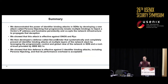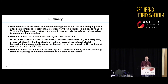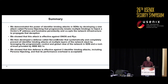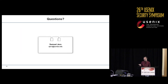In conclusion, we've demonstrated the power of identifier binding attacks in SDN by developing a new attack called persona hijacking that breaks multiple bindings to hijack the victim's IP address and hostname persistently, and co-opts the network infrastructure to propagate that. We've shown this attack is effective against ONOS and Ryu. We then developed a defense called SecureBinder to completely prevent these identifier binding attacks by leveraging the global view of the network provided by SDN and a root of trust provided by 802.1x, and we've shown that this defense is effective against three identifier binding attacks, including persona hijacking, and that its performance overhead is acceptable. Thank you very much, and I'd be happy to take your questions.